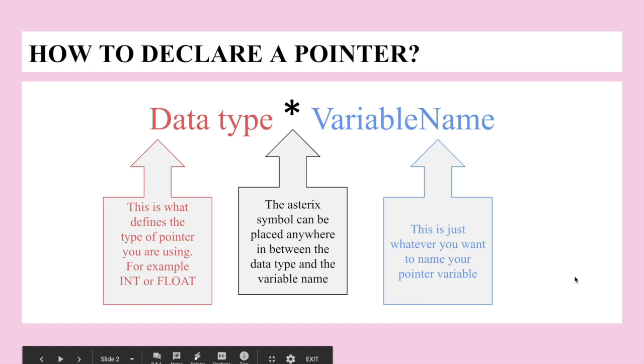When you declare a pointer you're going to say data type asterisk variable name and a semicolon at the end. As you can see in the boxes, the asterisk symbol can be placed anywhere, it can be placed next to the data type or next to the variable name.